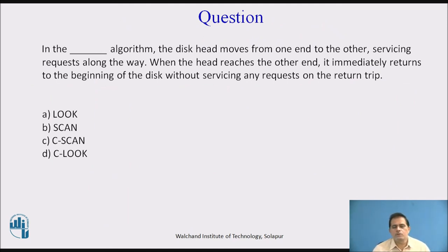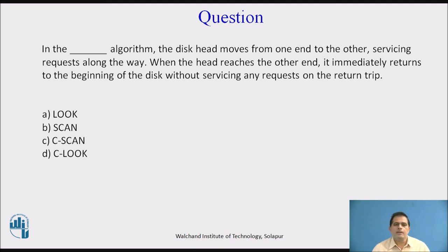Let us see a question on this algorithm. In the blank algorithm, the disk head moves from one end to the other servicing requests along the way. When the head reaches the other end, it immediately returns to the beginning of the disk without servicing any request on the return trip. The options are: A. Look, B. Scan, C. C-Scan, D. C-Look.